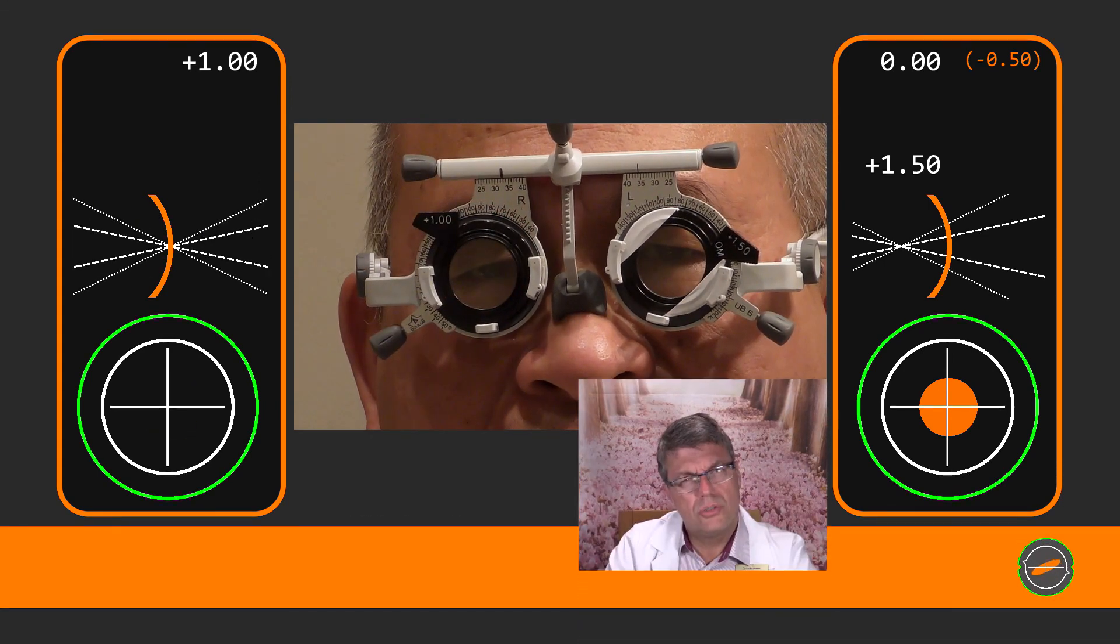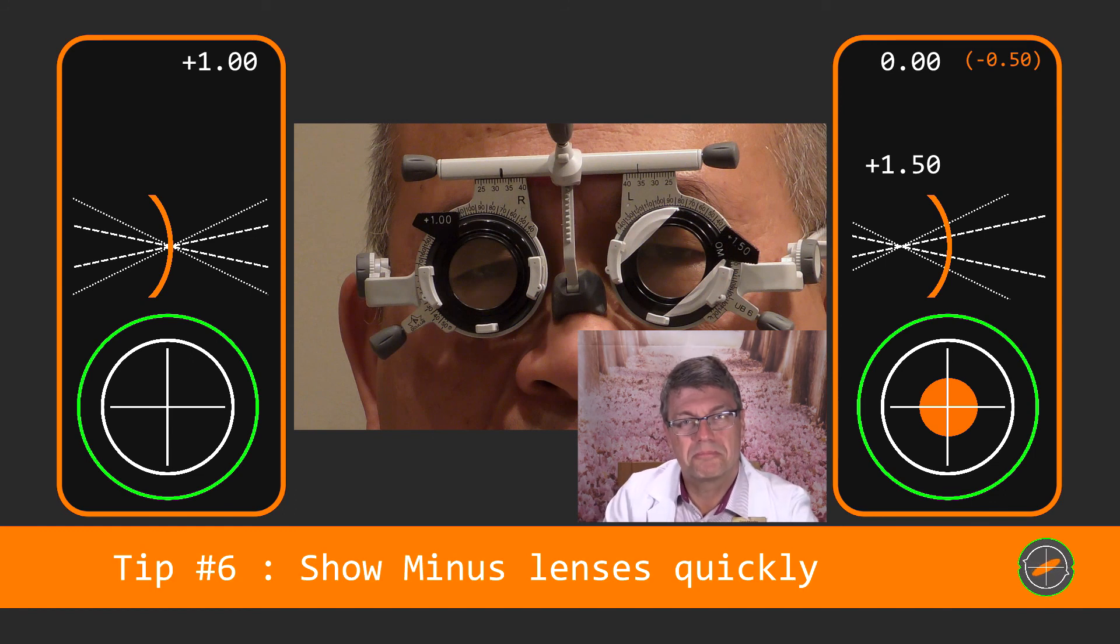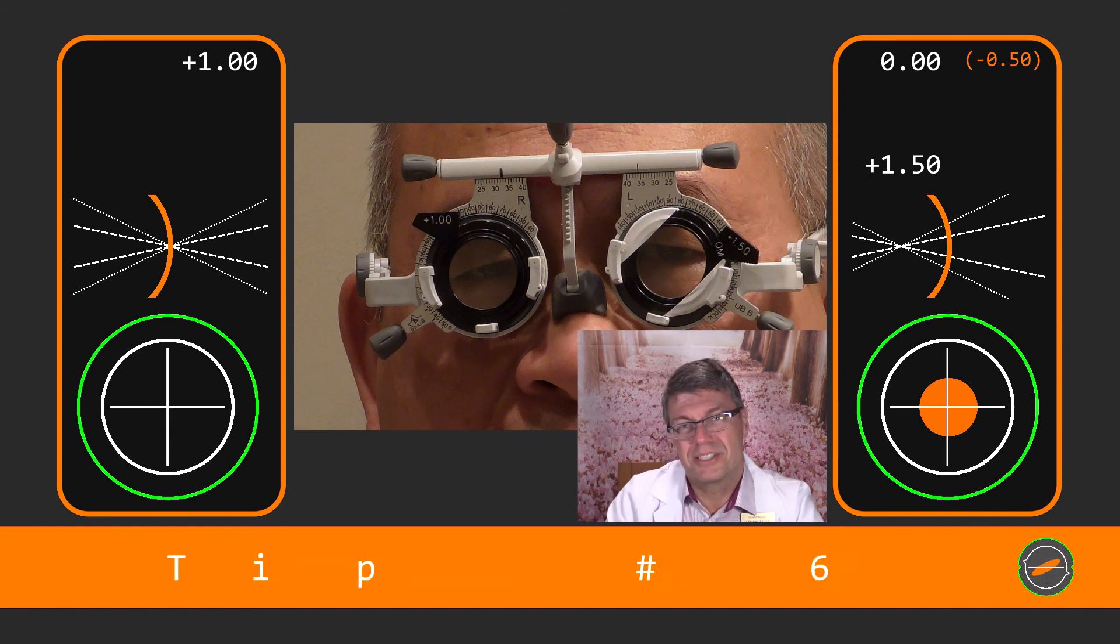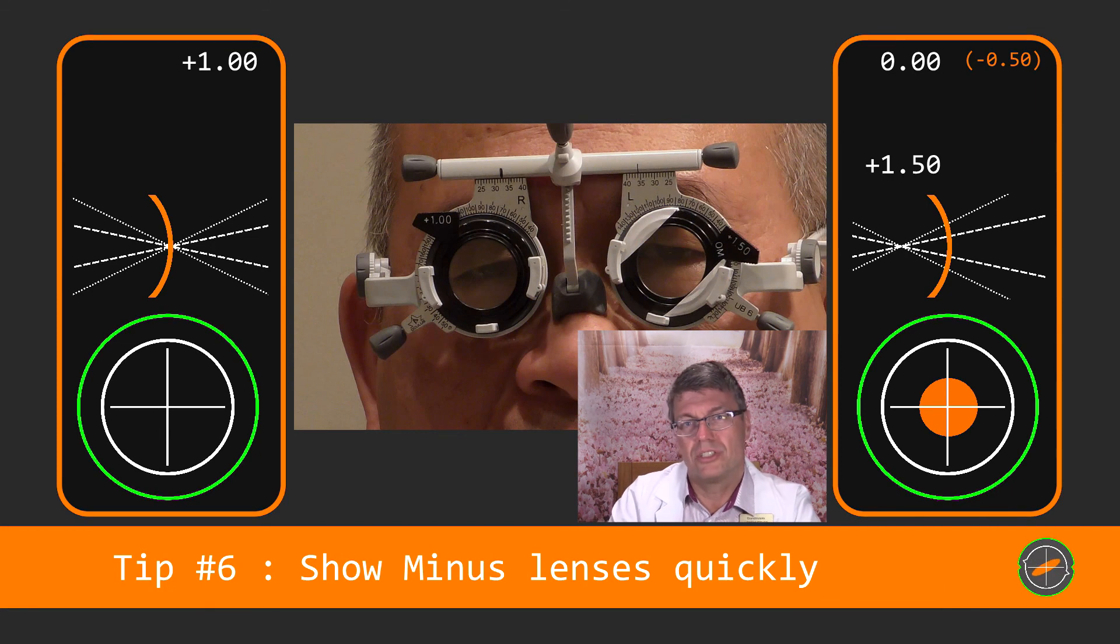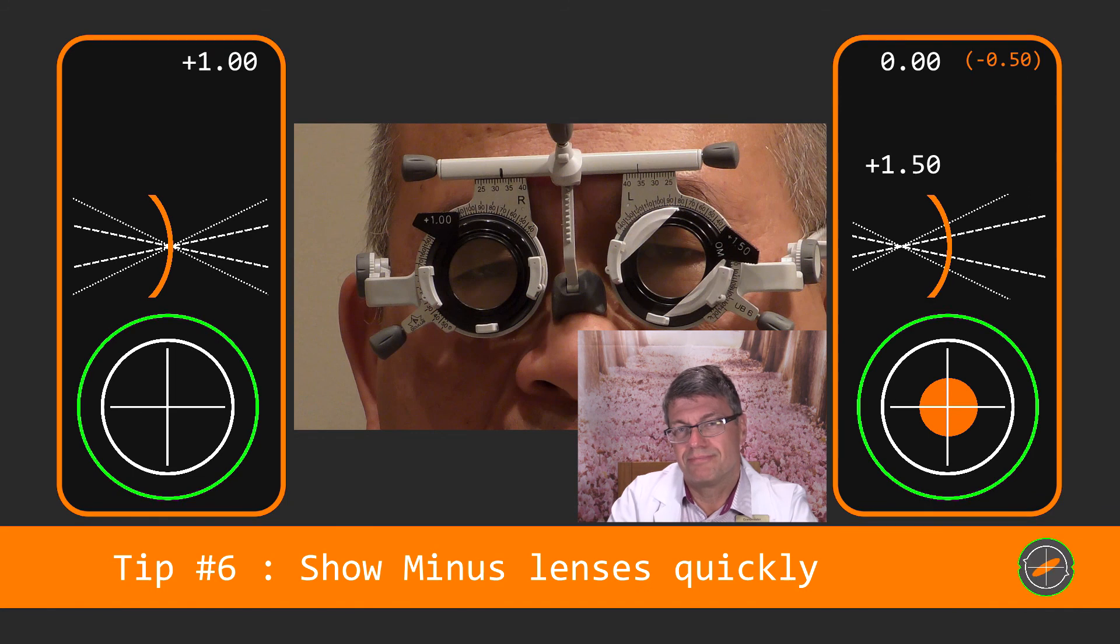Did you notice the slight difference in my presentation times? It's quicker for minus so you don't encourage the patients who accommodate. I find that 1.3 seconds is good for plus and 0.9 of a second good for minus. Although measuring the presentation times is impossible without using video analysis. Basically don't leave minus lenses in too long. It induces the accommodation.